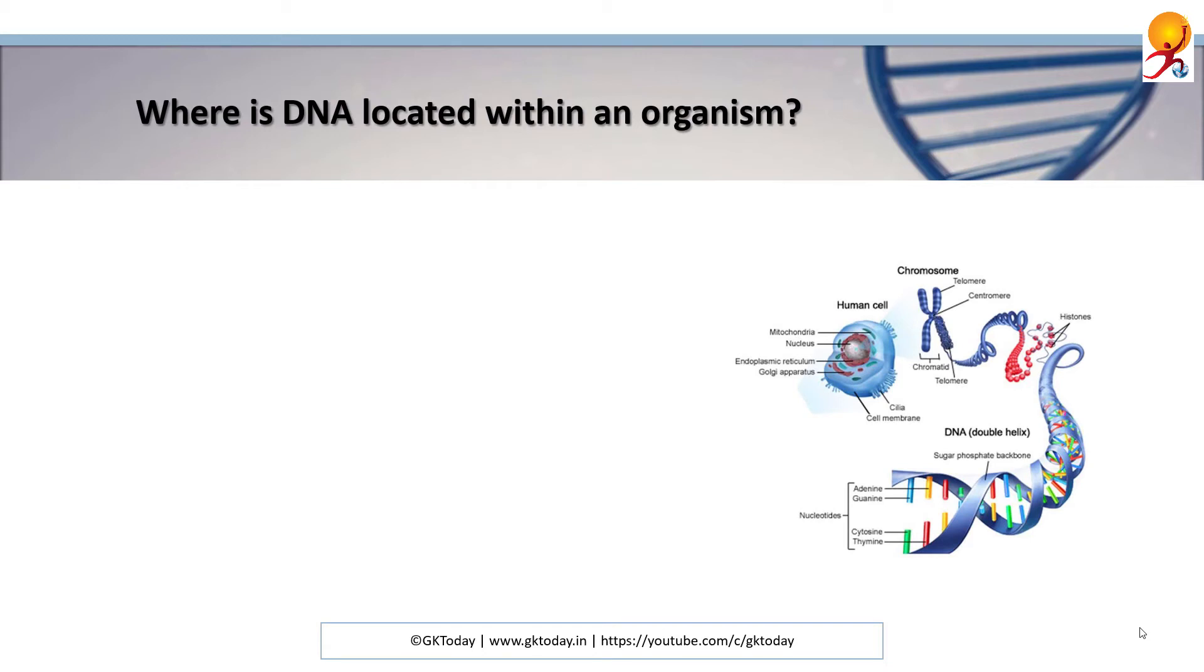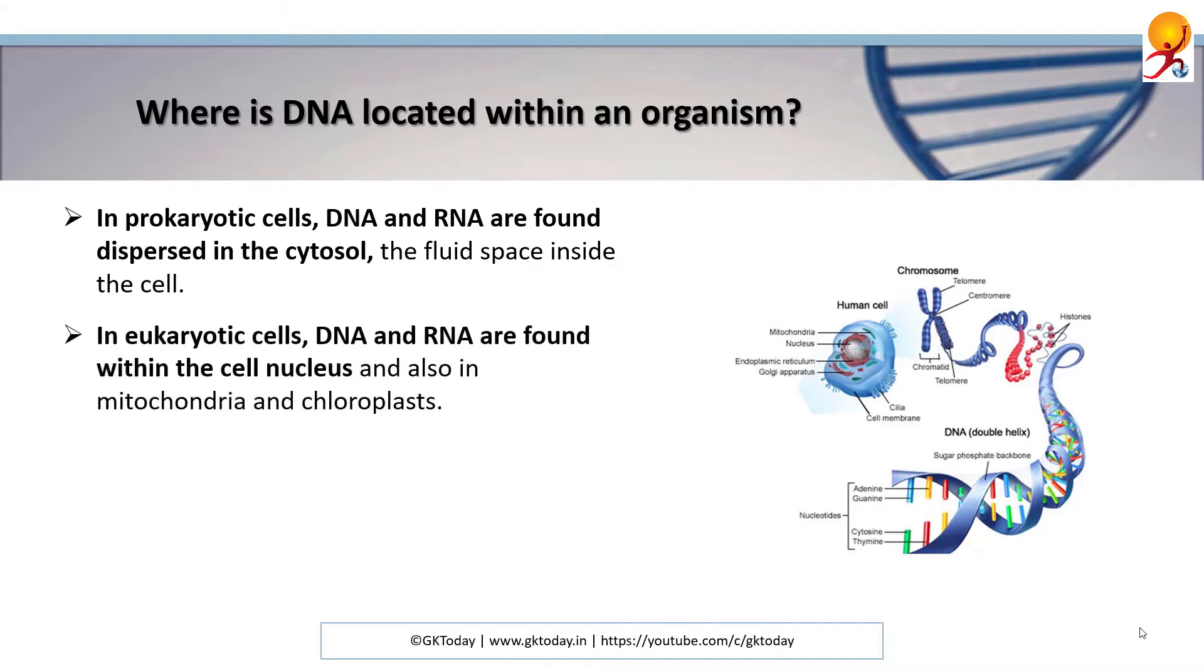Where is DNA located within an organism? In prokaryotic cells, DNA and RNA are found dispersed in the cytosol, which is the fluid space inside the cell. In eukaryotic cells, DNA and RNA are found within the nucleus and also in mitochondria and chloroplasts. RNA is also the main component of nucleolus and ribosomes in eukaryotic cells.